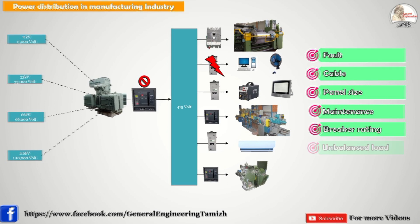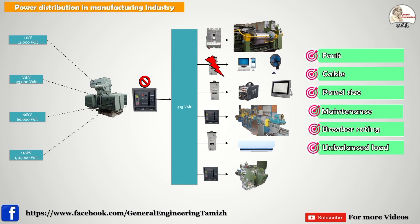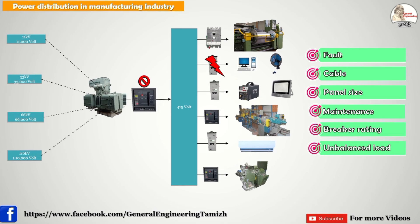The next scenario is unbalanced load. We have three phases — R, Y, B — and we must connect loads equally across all three phases. If R phase has 10 lights, Y phase should also have 10 lights. If Y phase has 50 lights the breaker will trip due to unbalanced load. In this single panel setup, you cannot choose phases properly — wherever space is available you connect the load — so balanced distribution is not possible.